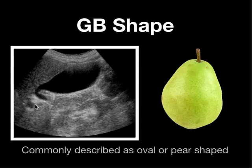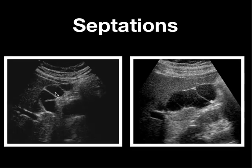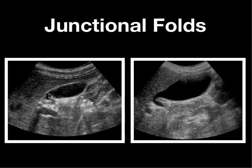Ideally, the gallbladder has been described as being oval or pear-shaped, but there's going to be a lot of variation to the shape of the gallbladder. Here are examples of phrygian caps — these are folds in the fundus of the gallbladder. On these sagittal views you can see the fold in the fundus, called a phrygian cap. Although not very common, here you've got a gallbladder with multiple septations, which theoretically poses an increased risk for gallstone development. Here are also examples of junctional folds by the neck, which are actually very common.